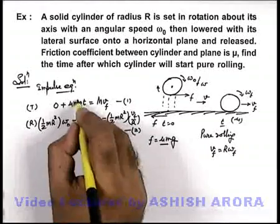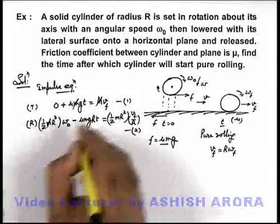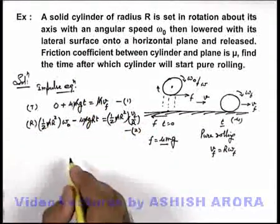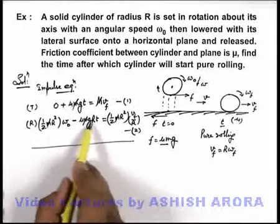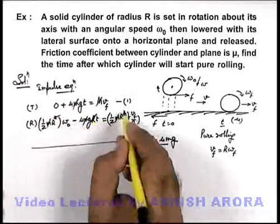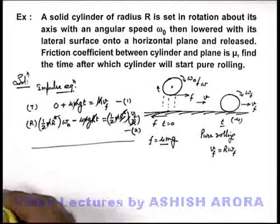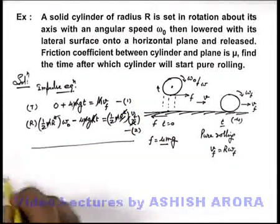And here this mass gets cancelled out, here also mass gets cancelled out. If we add the two equations this mu m g t will also cancel out, as we can also cancel this radius. In this situation...